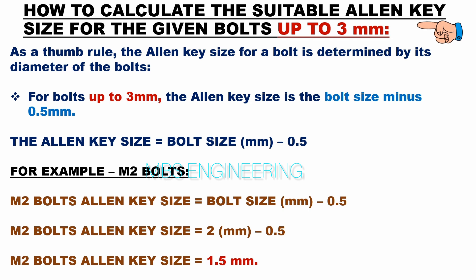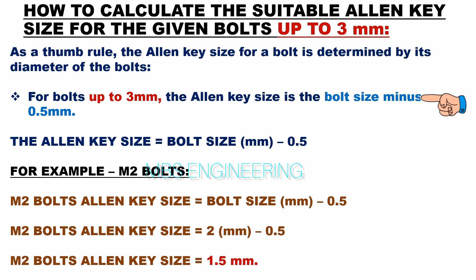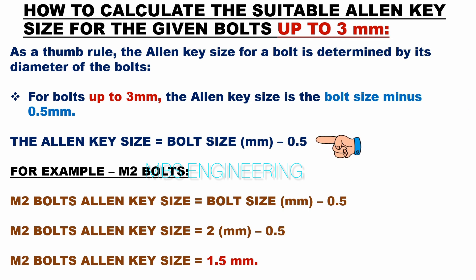We will understand how to calculate the suitable allen key size for bolts up to 3 mm. As a thumb rule, the allen key size for a bolt is determined by its diameter. For bolts up to 3 mm, the allen key size is the bolt size minus 0.5 mm. The formula is: allen key size = bolt size (mm) − 0.5 mm.